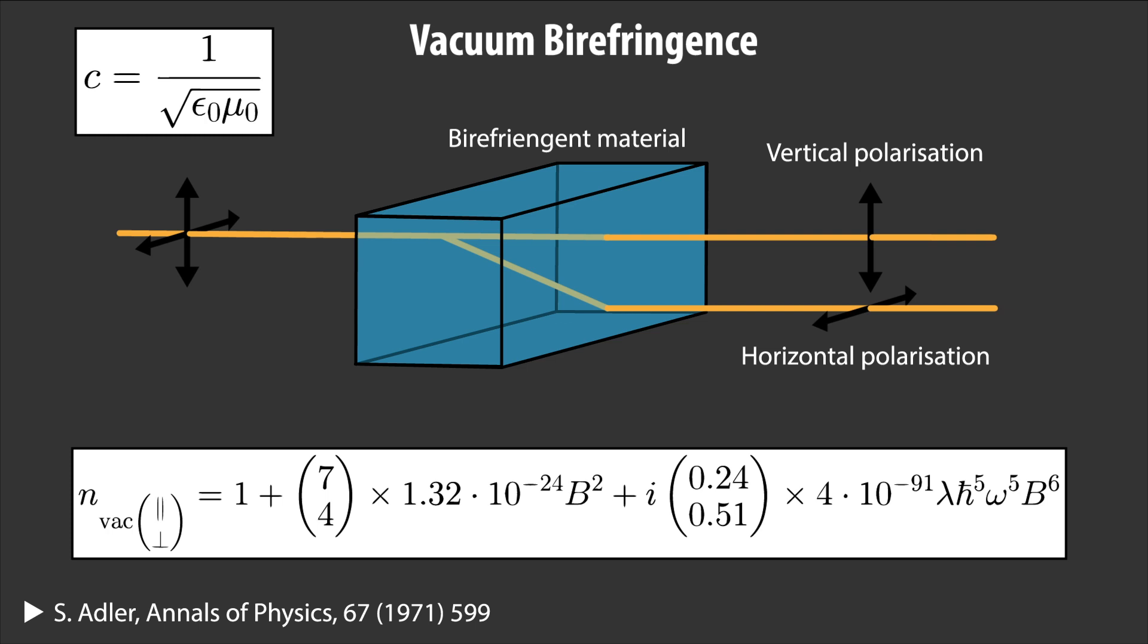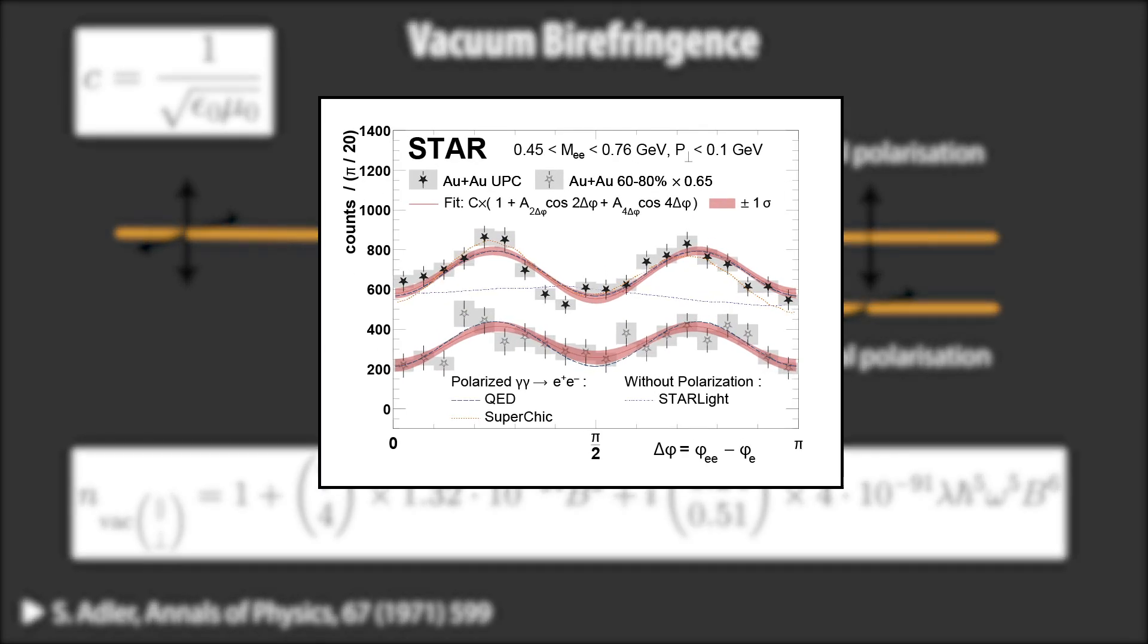By carefully measuring the position of the electron and positrons produced in these Breit-Wheeler interactions as a function of the light polarization, one can detect if the vacuum birefringence has occurred.